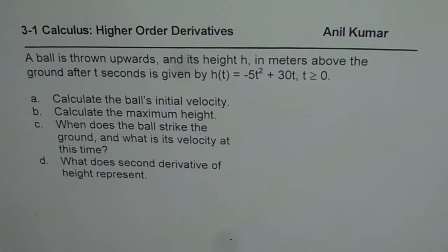I am Anil Kumar and now we will explore some higher order derivatives. The question here is, a ball is thrown upwards and its height h in meters above the ground after t seconds is given by h(t) = -5t² + 30t when t ≥ 0.